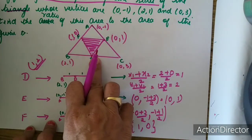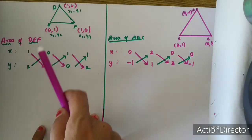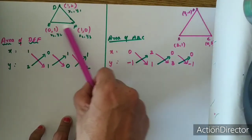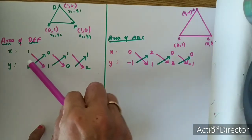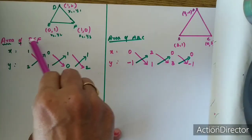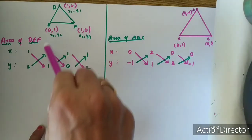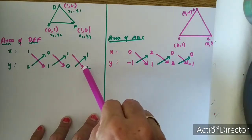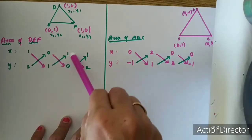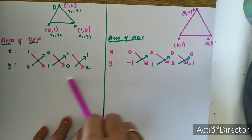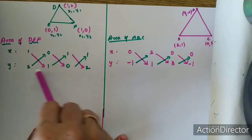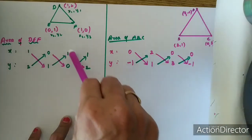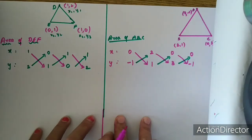Now I can find the area of triangle DEF and area of triangle ABC. I'll draw them separately so you can understand clearly. First I am going to find the area of the inside triangle DEF. I have one more easy method to teach you. Write the coordinates of D as (1, 2), next (0, 1), next (1, 0), and again repeat (1, 2). Wherever the pink arrow is, you add; the green arrows you subtract. This time I have written horizontally — the process is the same.